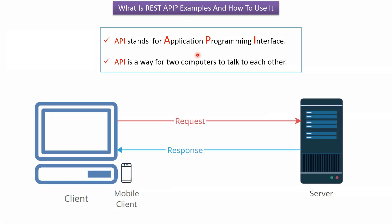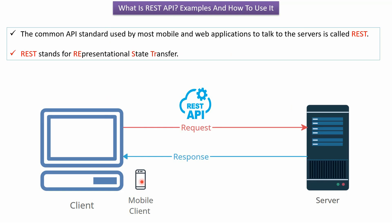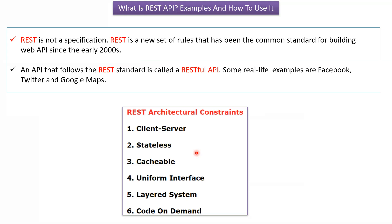API stands for Application Programming Interface, and an API is the way for two computers to talk to each other. The common API standard used by most mobile and web applications to talk to the server is called REST, which stands for Representational State Transfer. REST is not a specification — it is a set of rules that has been the common standard for building web APIs since the early 2000s. The API that follows the REST standard is called a RESTful API.